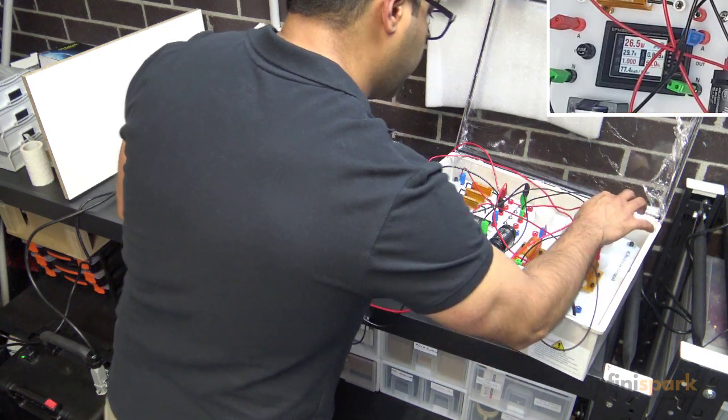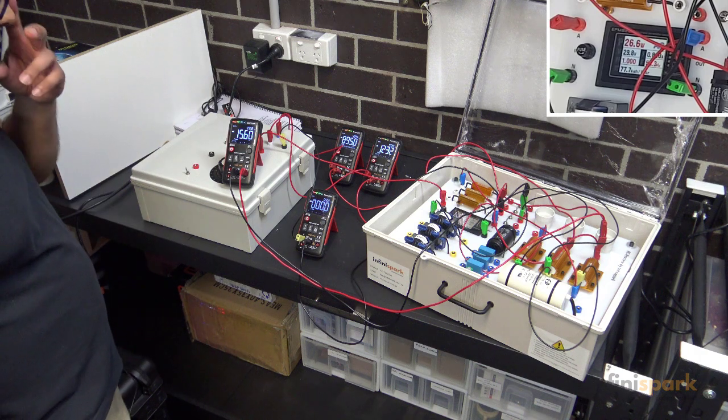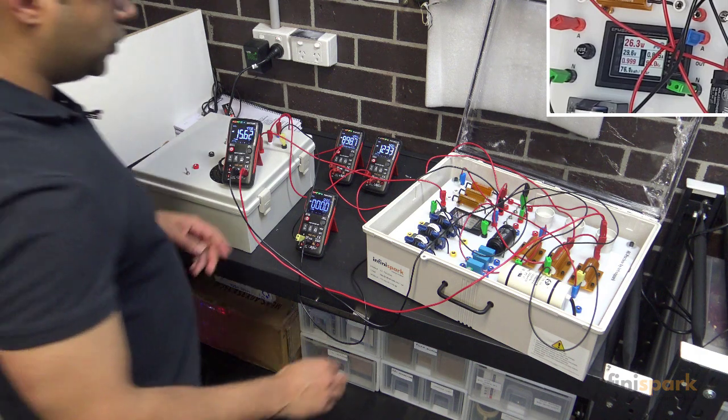This is where we'll see the difference. Phase C we're seeing 15.6 volts, so a big difference in voltages for each phase now just because the neutral is disconnected.